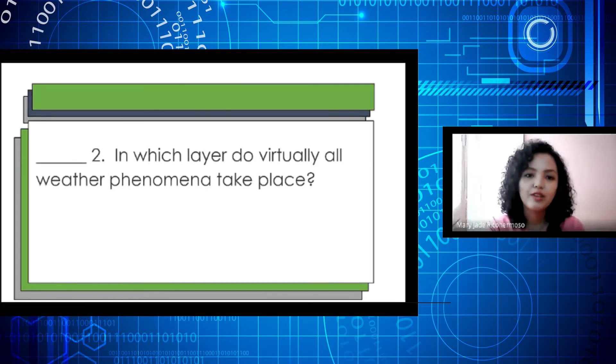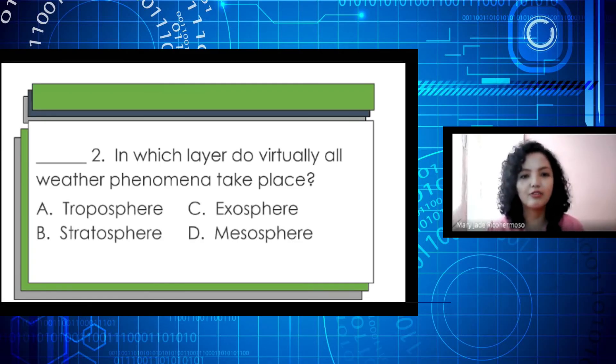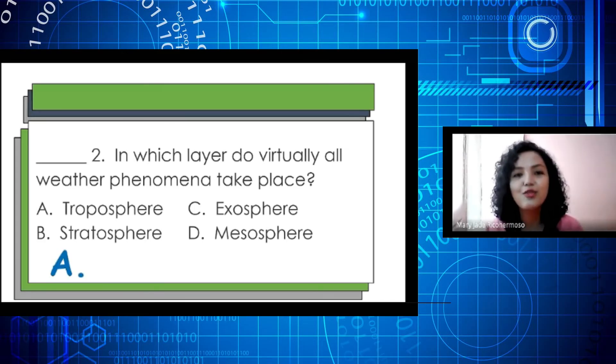Next question. In which layer do virtually all weather phenomena take place? A. Troposphere, B. Stratosphere, C. Exosphere, and letter D. Mesosphere. The correct answer is letter A. Troposphere. You are right!